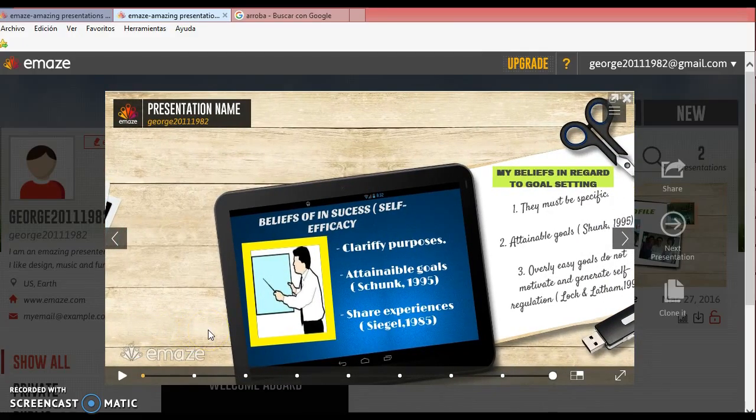Finally, I'm going to show my beliefs in success in terms of self-efficacy. So I have three aspects that I've found from Siegel and Schunk: clarify purposes, attainable goals which help the students to develop a proper learning process, and share experiences. As I mentioned before, experiences build up knowledge, right? And that's part of the contextualization as well.